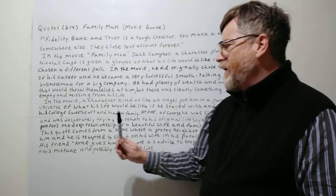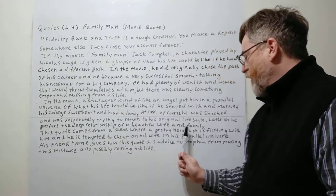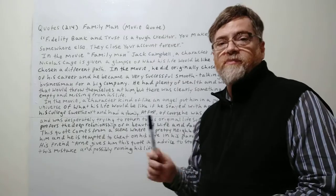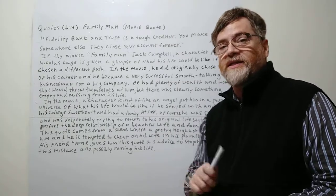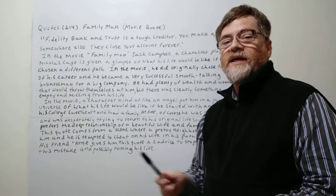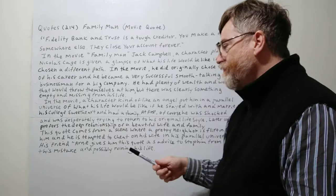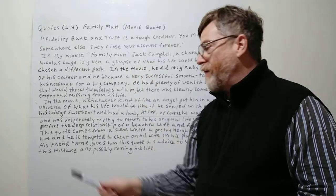Later on he prefers the deep relationship of a beautiful wife and family. So the angel does appear to him later and kind of explains it. This is just for a short time. This is just giving you a glimpse, a way of teaching him. Now getting back to the quote though.